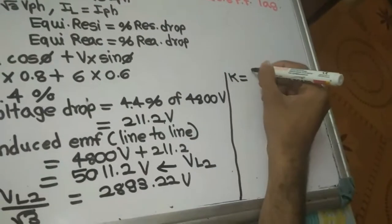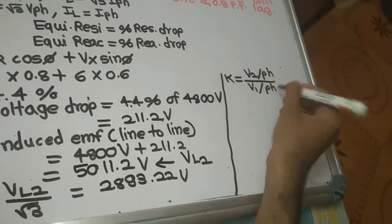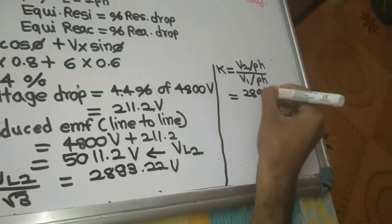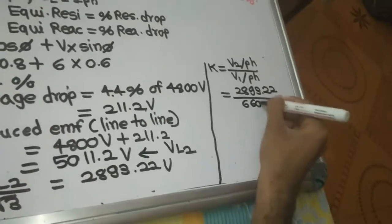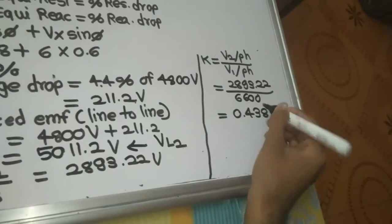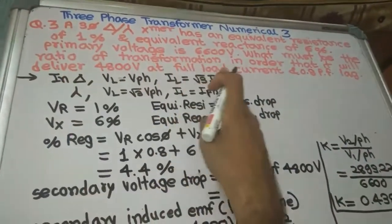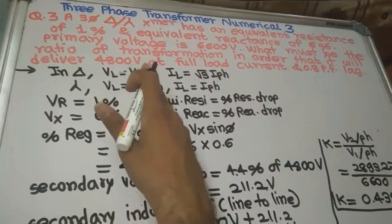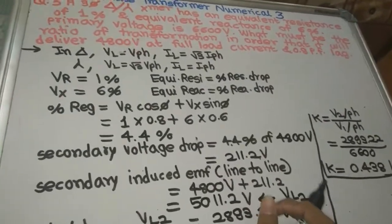Transformation ratio K = secondary voltage per phase / primary voltage per phase = 2893.22 / 6600 = 0.438. So K = 0.438. This answers: what must be the ratio of transformation in order that it will deliver 4800 volt at full load current and 0.8 power factor lagging?